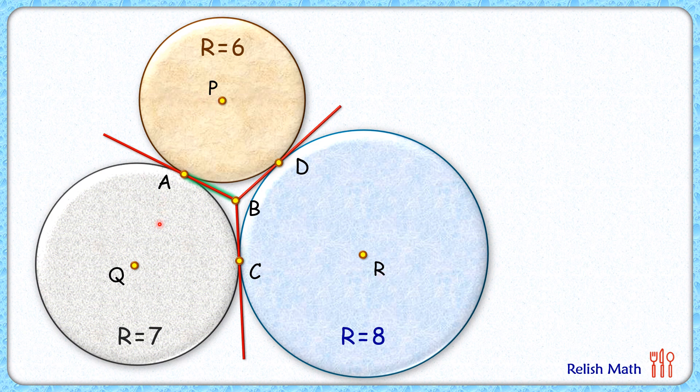We know that when two circles are touching at a point, their centers and the point of contact lie in a straight line. The same way, PDR will be in a straight line and QCR will be in a straight line.